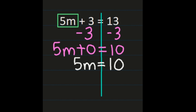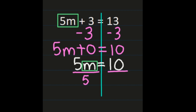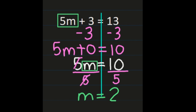Now we have a one-step equation. Boxing m shows what we need to isolate. We have 5 times m, so we divide both sides by 5. The 5s simplify out on the left, giving us m. On the right, 10 divided by 5 is 2. So m equals 2. You can check by substituting 2 for m back into the original equation.